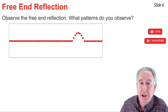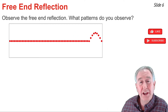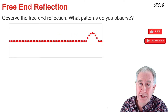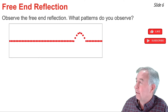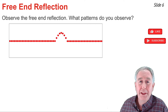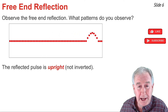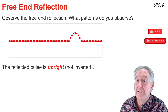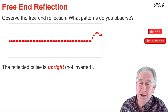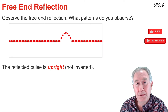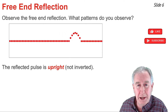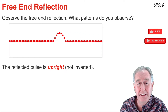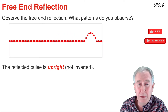This looping animation depicts free-end reflection. Notice that the last particle of the medium is free to move up and down once the pulse reaches it. Unlike fixed-end reflection, there is no inversion with free-end reflection. As the incident pulse approaches the boundary, particles are displaced upward, and as the reflected pulse leaves the boundary, the particles of the medium are still displaced upwards — no inversion.